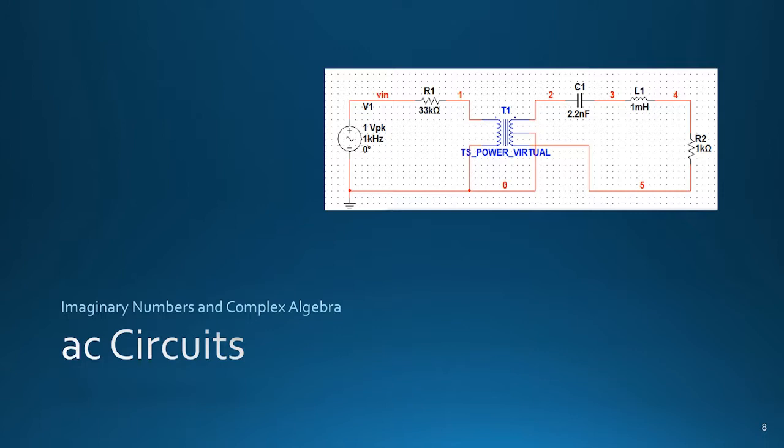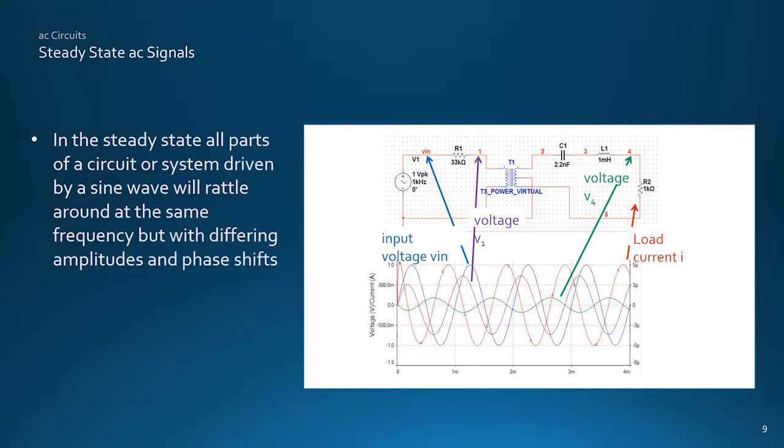This section looks at how components of AC circuits respond to sine waves, and the operations needed to analyze them. Such analysis is helped by the fact that well-behaved systems like this circuit, driven by a constant amplitude sine wave supply, will settle down to a steady state.